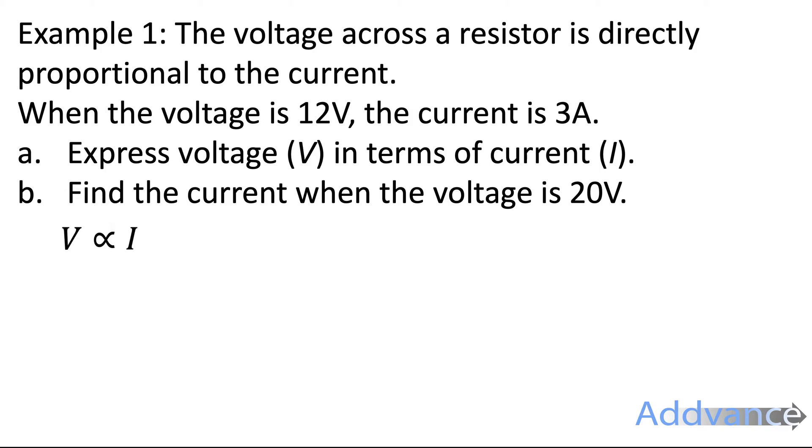We know that the voltage is proportional to the current. And we can write that as V equals kI. Again, that k represents something, a number that is the multiplier. We know that V equals 12 when I is 3, the current is 3.